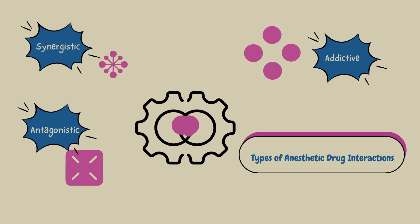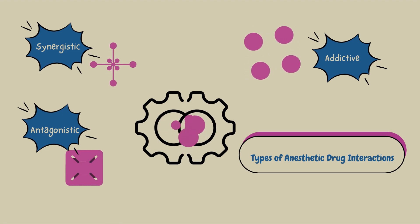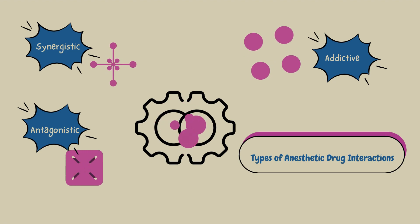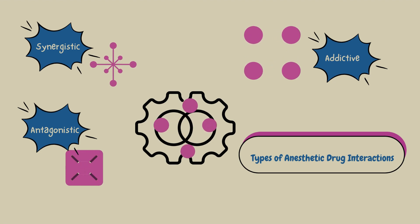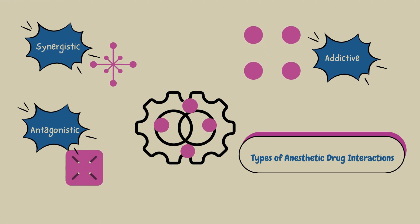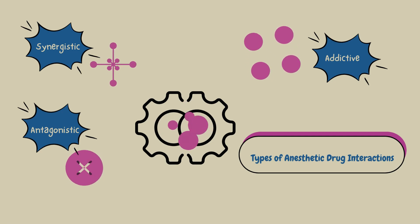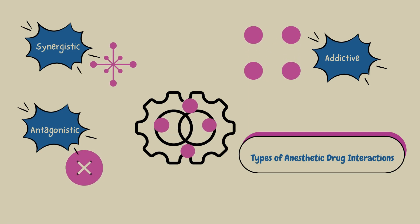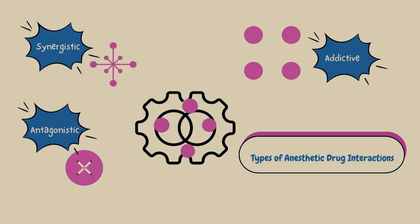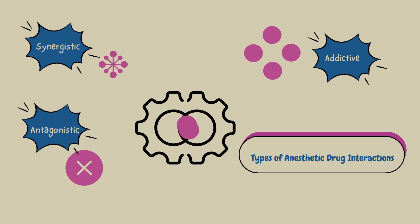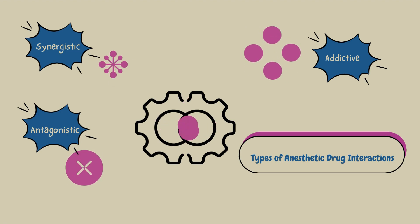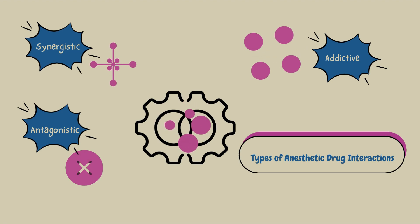There are three basic sorts of interactions to take into account. First, additive — this may be seen as simple addition, where the total impact is just the sum of the parts. Second, synergistic — when two or more factors interact synergistically, the sum of their effects is greater than the sum of their parts.